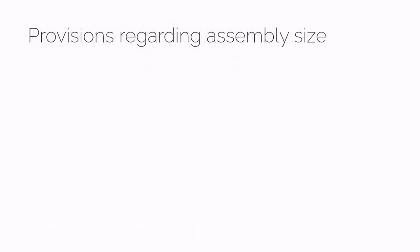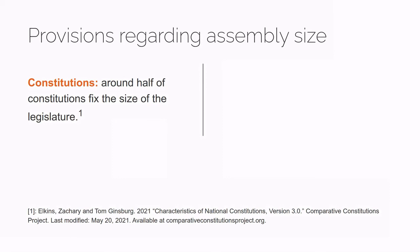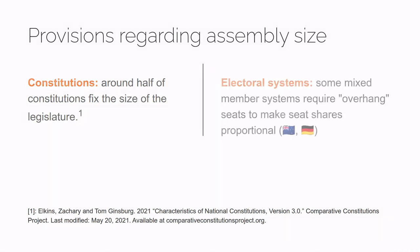Assembly size is often fixed in the constitution of a country — roughly half of written constitutions do this. But assembly size can change over time, or even as the result of an election. In some mixed-member electoral systems, the number of seats in the legislature can change if it's necessary to ensure that parties' seat shares are roughly proportional to their share of the vote. But for the most part, assembly size is a relatively persistent characteristic of a country's political institutions, and one worth knowing about.